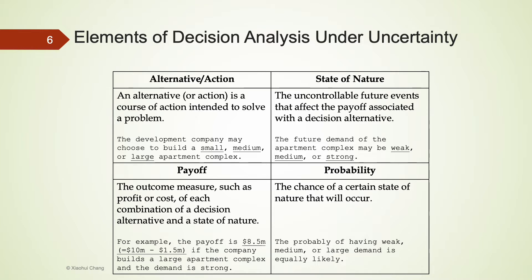The state of nature is the outcome of the uncontrollable future events that affect the final payoff. The company faces uncertainty about future demand, which can be weak, medium, and strong. There are three states of nature.